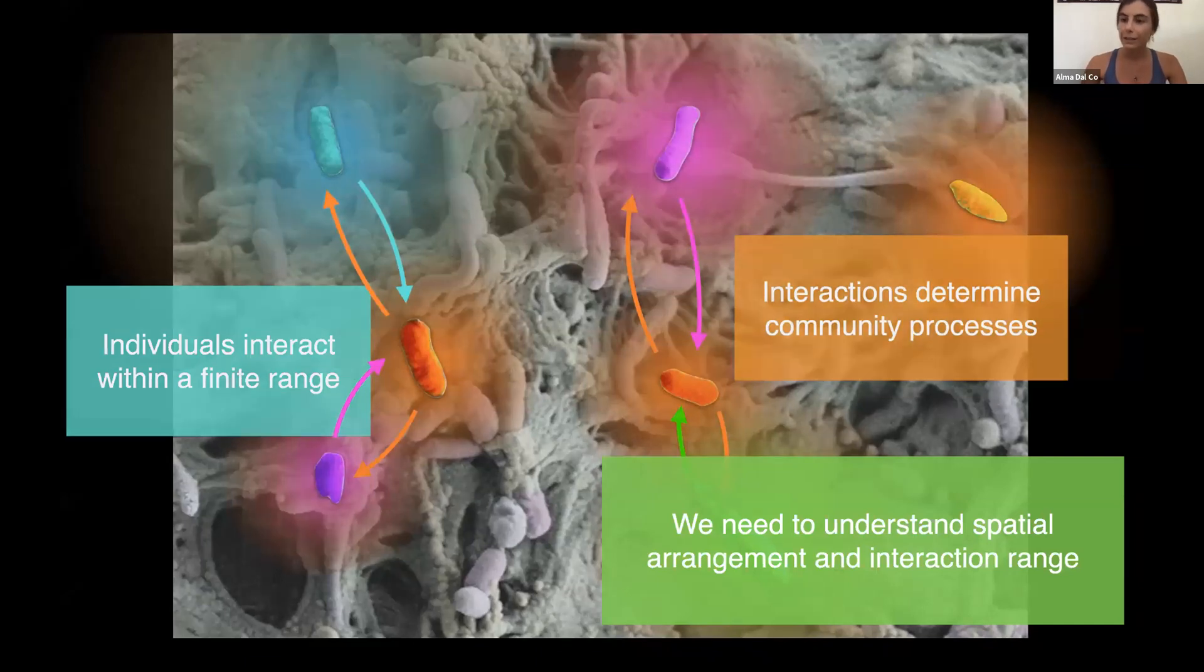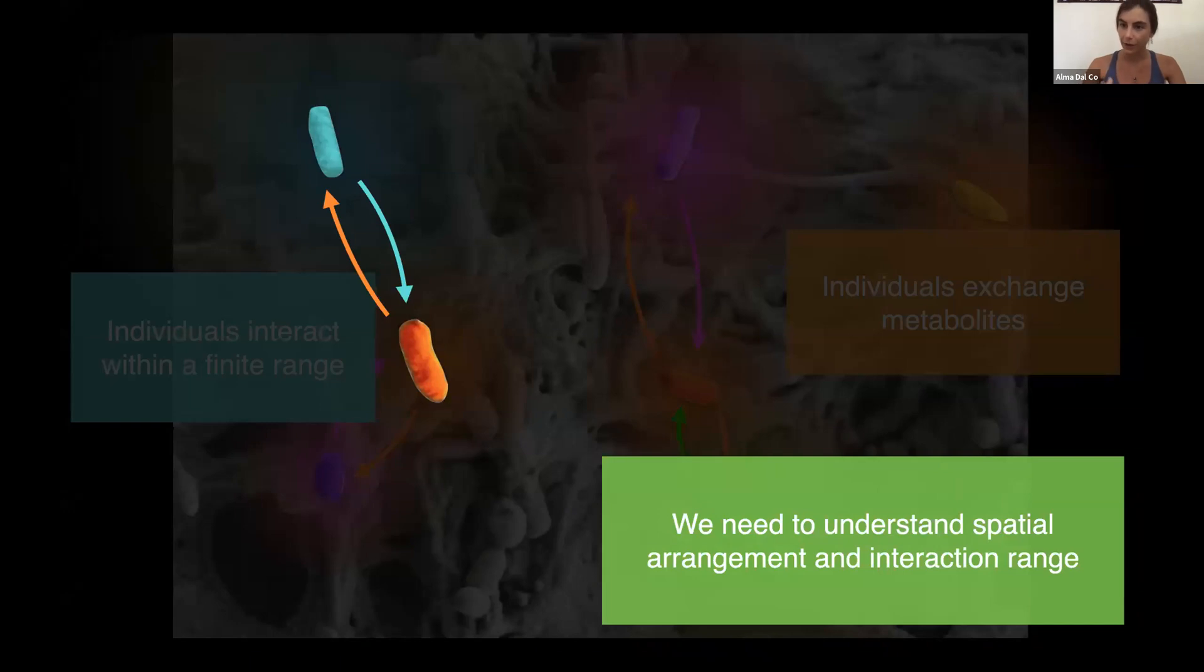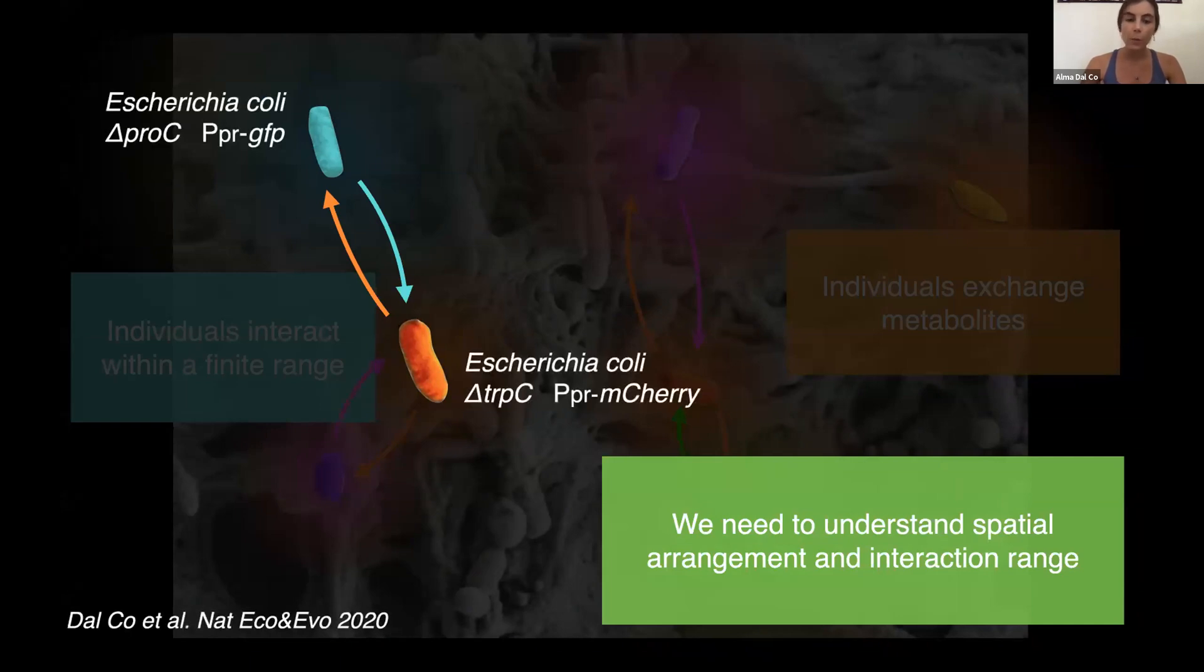We were interested in reconstructing the spatial interaction network within a microbial community and to do so we engineered a simple microbial community composed of two cell types. These two cell types cannot produce an amino acid each but they can grow together by receiving this amino acid from the partner.